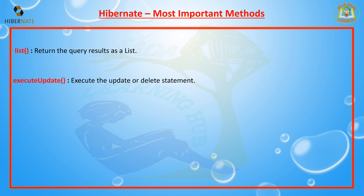The next method is list. The list method returns the query result as a list. When performing multi-row select operations, you call the list method and it returns the query results as a list.